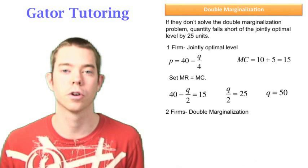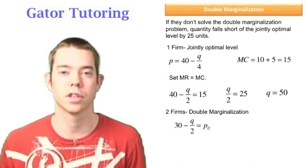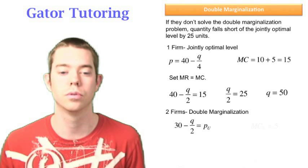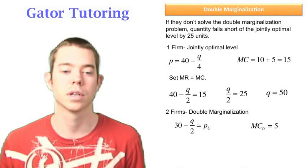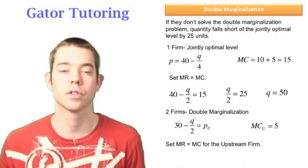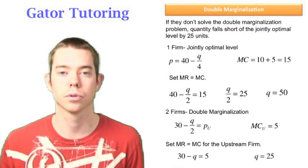So now we need to look at with two firms, and this is the double marginalization problem. We already know that the inverse demand for the upstream firm is 30 minus Q over 2. So we know the marginal cost for the upstream firm was 5, so we can set marginal revenue equal to marginal cost for the upstream firm to solve. We get 30 minus Q equals 5, or Q equals 25.